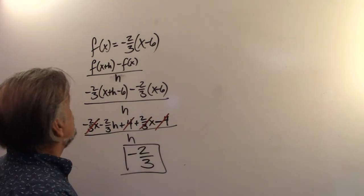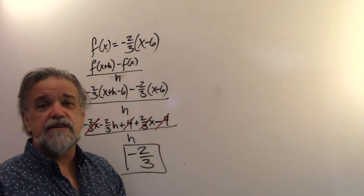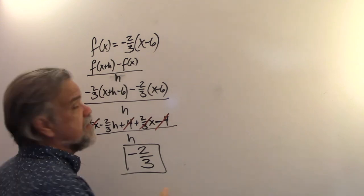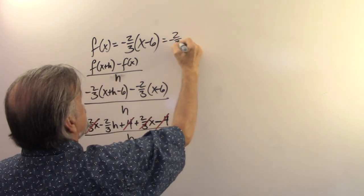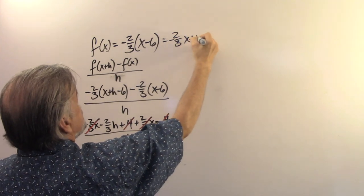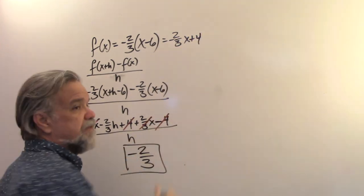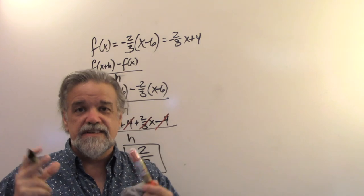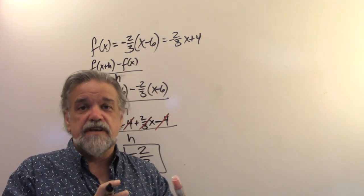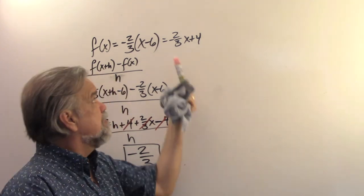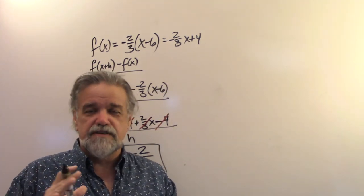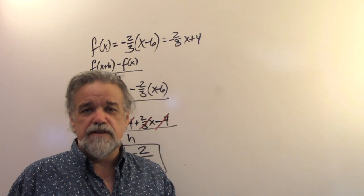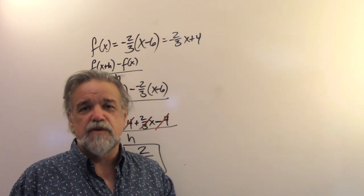Oh, I fell for it again. This is a linear function. This could just as easily be written negative 2 thirds x plus 4. So there's our slope negative 2 thirds. And remember, the difference quotient is an average rate of change. And a linear function has a constant rate of change. So the difference quotient for a linear function will always be the slope of that function.